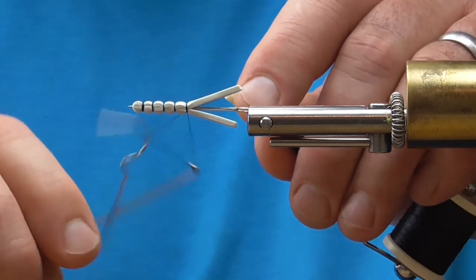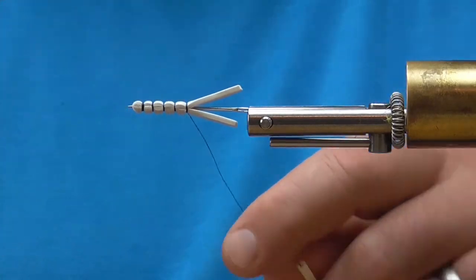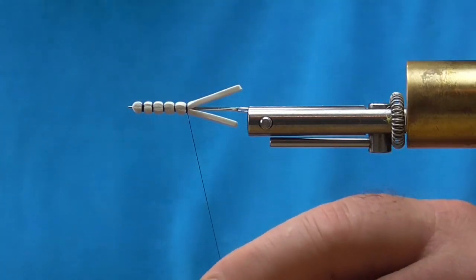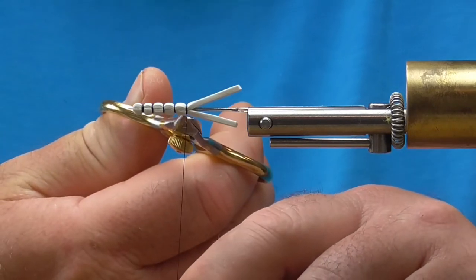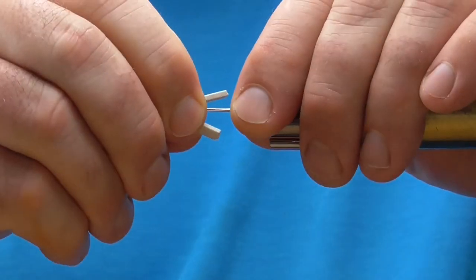The thread I'm using is a little bit thicker thread than I normally would use for most of my fly applications. This is a 140 denier and the reason I'm doing that is so it doesn't cut the foam itself. So keep that in mind.